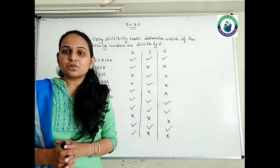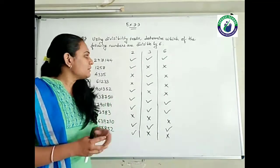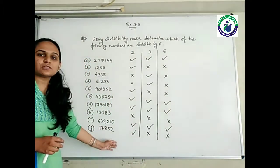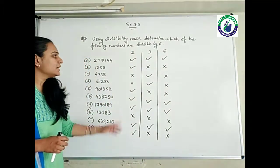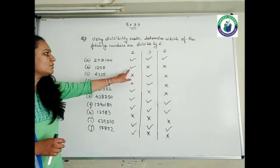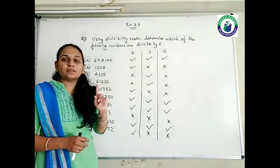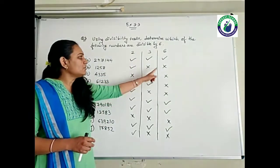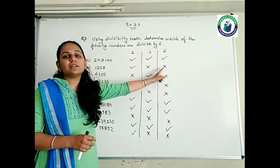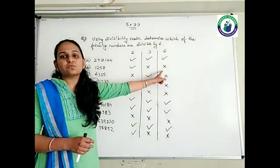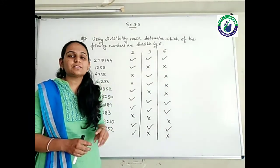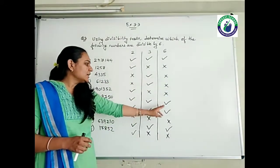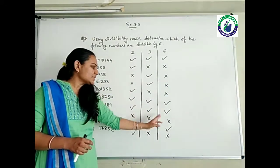Is it okay to all of you? Similarly, you can do the remaining questions also. First, check whether it is divisible by 2. If it is yes and 3 is saying no, then definitely it is not going to be divisible by 6. If both are agreed, then it will be yes.